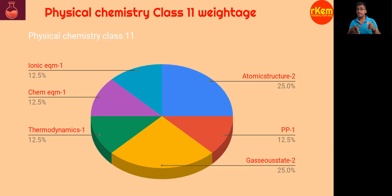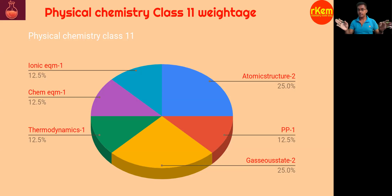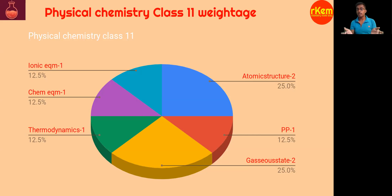Gaseous state — two questions are asked. This is very important. One question is compulsory from the real gas equation, that is the Van der Waals equation. The other question is from kinetic energy or a simple PV = nRT based numerical.